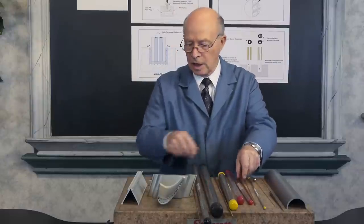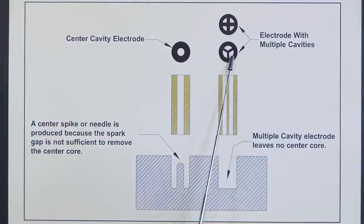Let's look at the next diagram. Notice the electrode has holes inside of it - multiple holes. The small ones are very small, and you can get away with one hole. But the larger electrodes have to have multiple holes. Here's the reason why: a center spike or needle is produced because the spark gap is not sufficient to remove the center core. It's sparking and leaving a core, and that core is going to create problems. You have to remove that core.